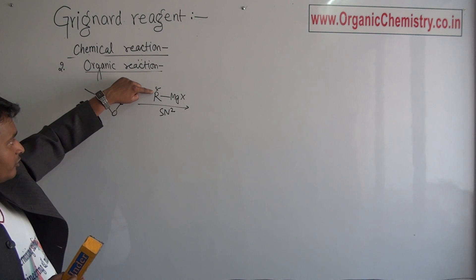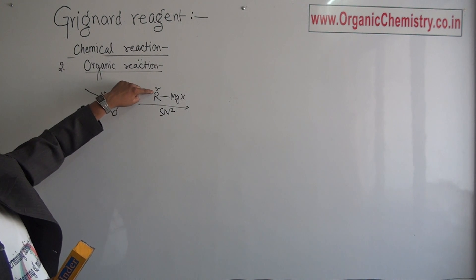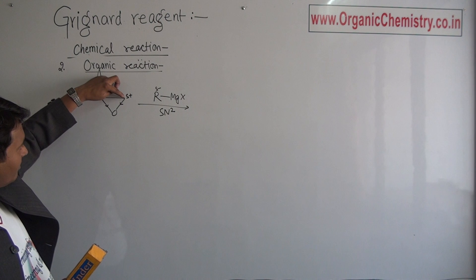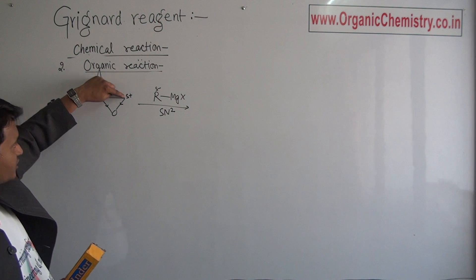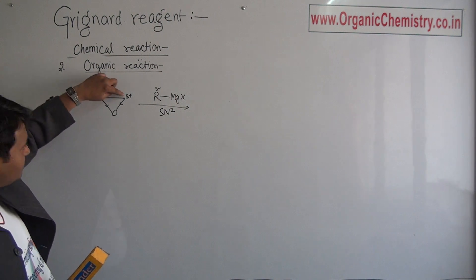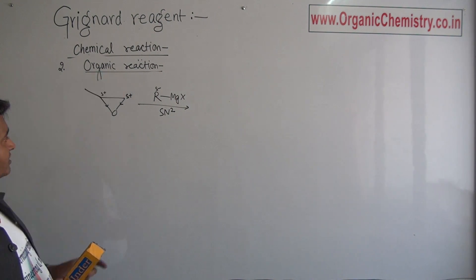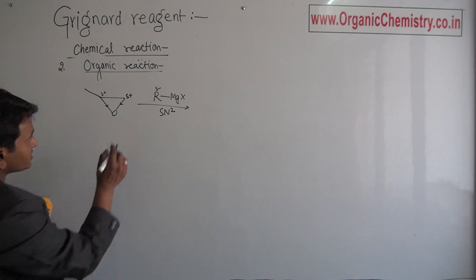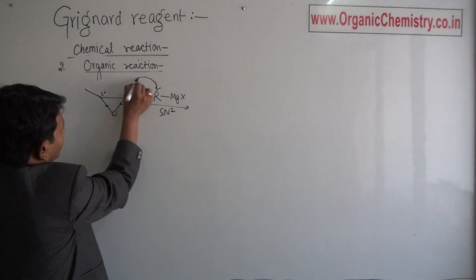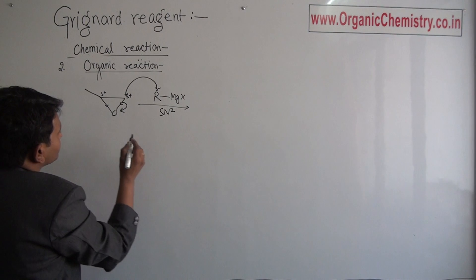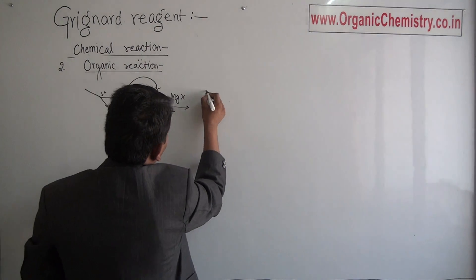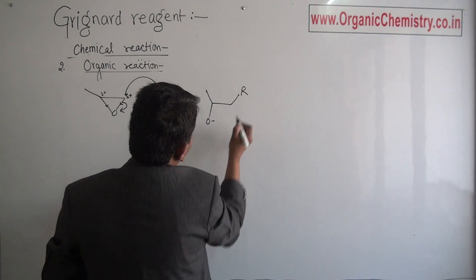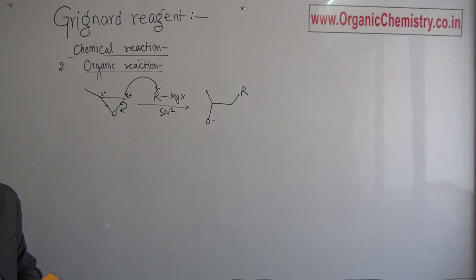There is a strong nucleophile, so it will attack over the position of maximum positive charge and minimum steric hindrance. This is the position which has maximum positive charge and minimum steric hindrance, so this nucleophile will attack over this part, break this bond, and give this type of molecule.